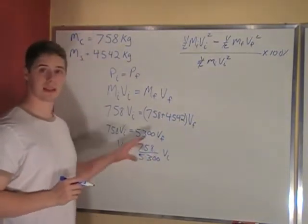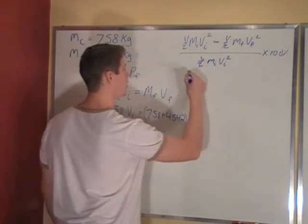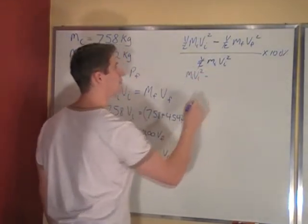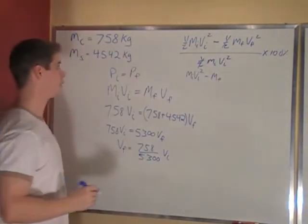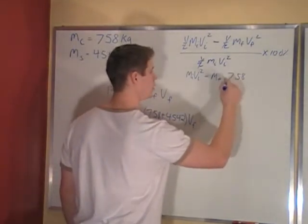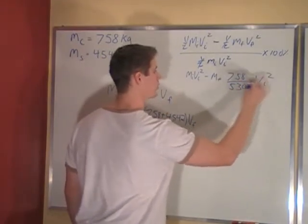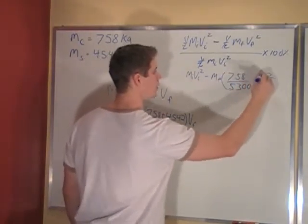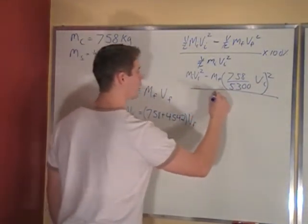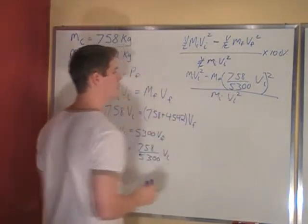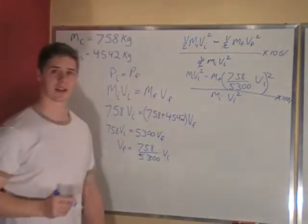Now what we do is we take this and we plug it in here for vf. So we have mivi² minus mf times vf squared, so this squared. So, 758 over 5300 vi squared, that's all squared, all divided by mivi squared. So this times 100% is my percent of kinetic energy lost.